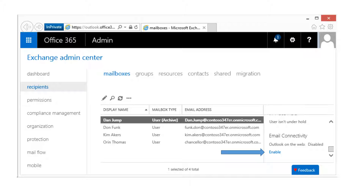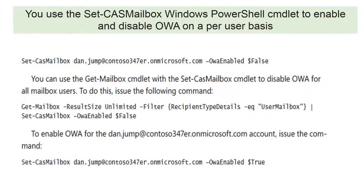If OWA has been disabled for a user and you need to re-enable it, go to the Recipients link in the Exchange Admin Center, find the mailbox, select it, and click Enable. Use the Set-CASMailbox PowerShell cmdlet to enable or disable OWA on a per-user basis. To enable or disable OWA for all accounts in the company, use Get-Mailbox with the ResultSize Unlimited parameter, then pipe to Set-CASMailbox to disable OWA for the entire company.